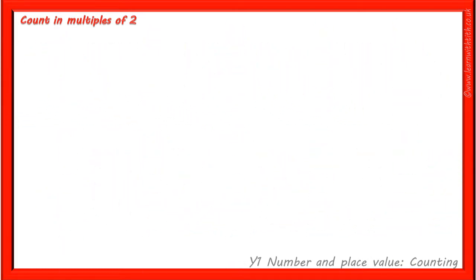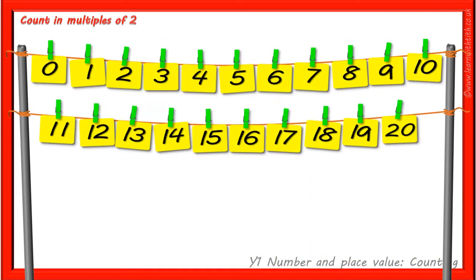We can also represent counting in multiples of 2 on a washing line, where we can start counting at 0, then count every other number like this: